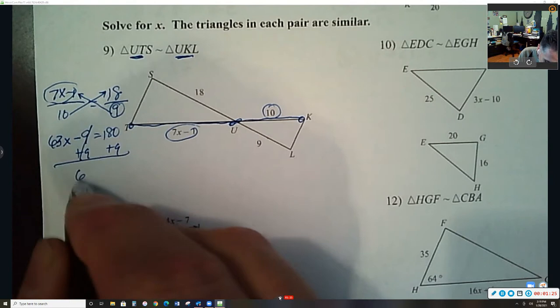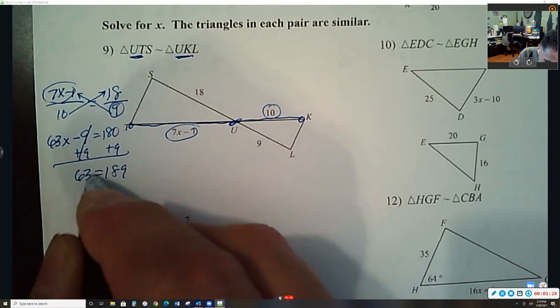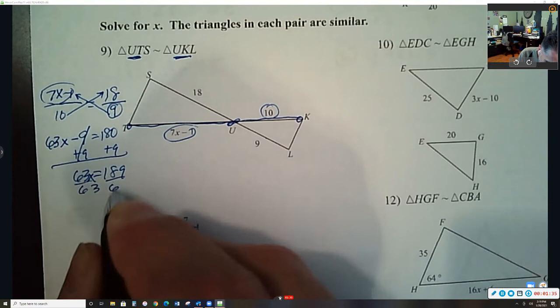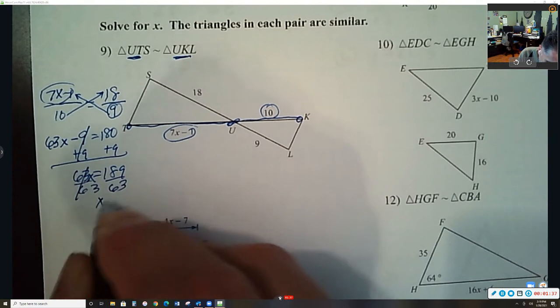That goes away. 63 equals 189, 63x. Divide both sides by 63, then you get x equals 3.